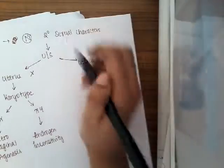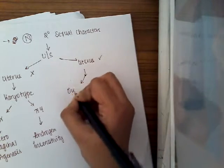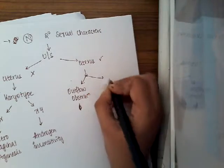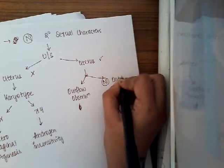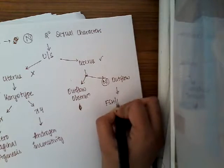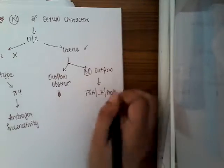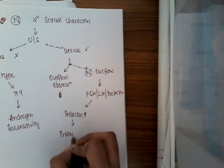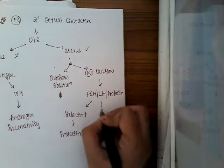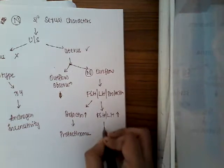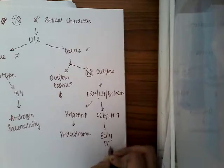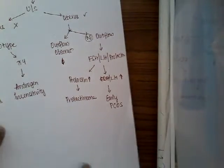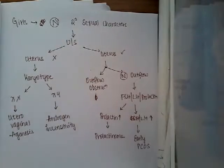If the uterus is present, you'll have to see whether the outflow is normal or obstructed. If the outflow is obstructed, then you can think of outflow obstruction. If outflow is normal, then you'll have to check FSH, LH, and prolactin. If prolactin is increased, then it is prolactinoma. If LH is increased, it can be early polycystic ovarian disease. It can also be constitutional delay.